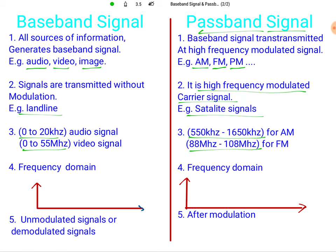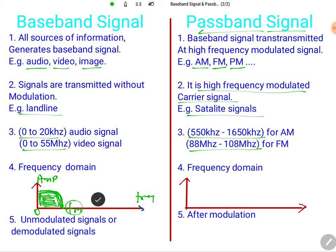Now let us understand the frequency domain representation. For a baseband signal, with amplitude on the y-axis and frequency on the x-axis, the signal ranges from zero frequency up to some maximum frequency FM. As seen, audio signal goes from 0 to 20 kilohertz and video signal from 0 to 55 megahertz. So baseband signal starts from zero hertz up to some frequency FM.